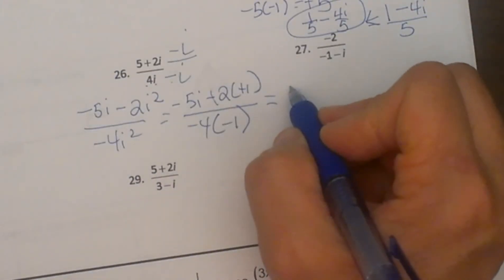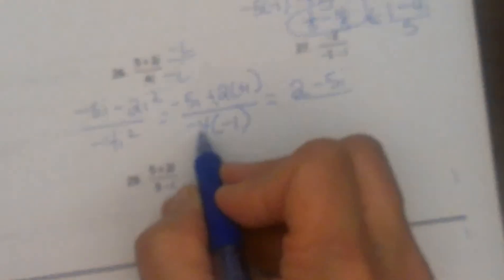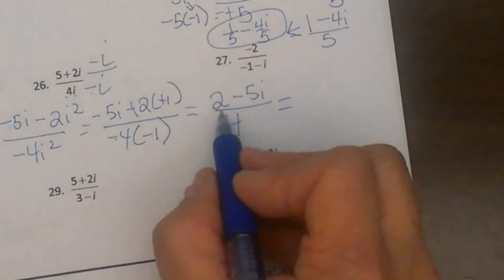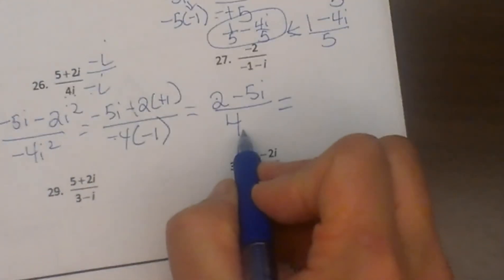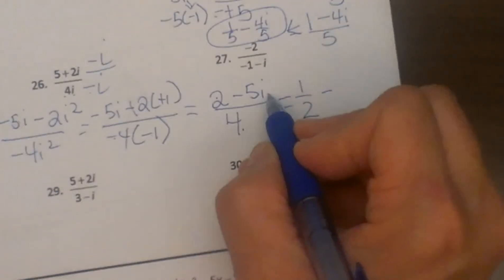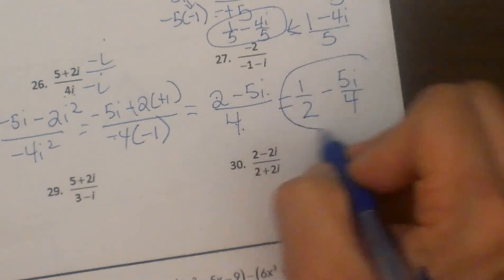Up top I have a double negative, so that becomes a positive, and I need to write it in the correct form. So I will get 2 minus 5i all over positive 4. And then if we split this into two fractions, I am going to have 2 fourths, which reduces to 1 half, minus 5i fourths, and that one won't reduce. And there is your answer.